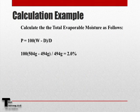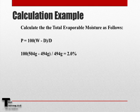We take 100 multiplied by the difference between the original mass of the sample and the mass of the sample after drying, which in this case would be 10. Therefore, we would have 1000 divided by 494 grams, which would equal 2% total evaporable moisture.